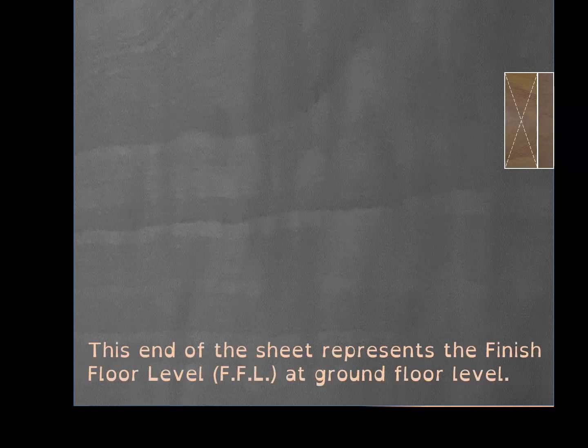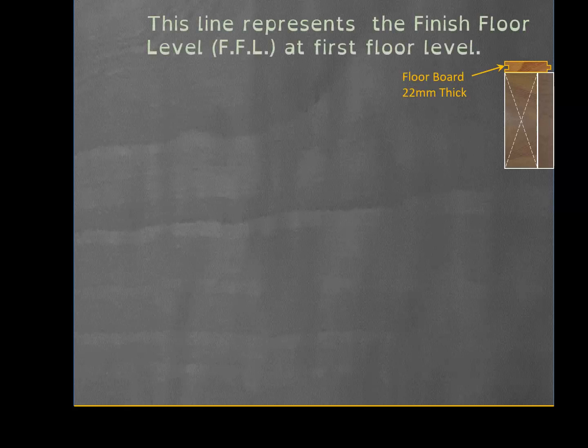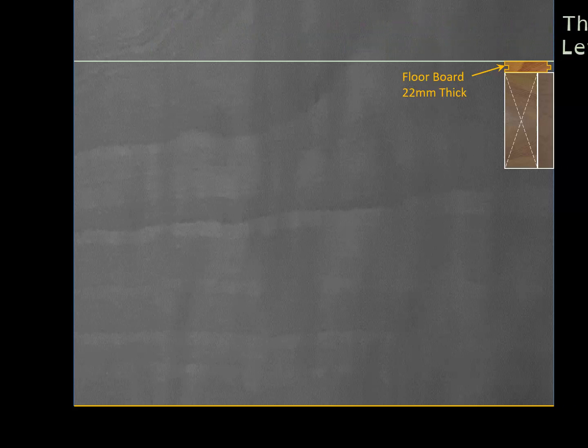At the bottom edge of the sheet, that will represent the finish floor level at ground floor level, animated there in pink. To establish the next floor level up, add on the finish floor. In this case we're drawing in a tongue and groove floorboard. Don't make the mistake of taking the top of the joist as the finish floor level.